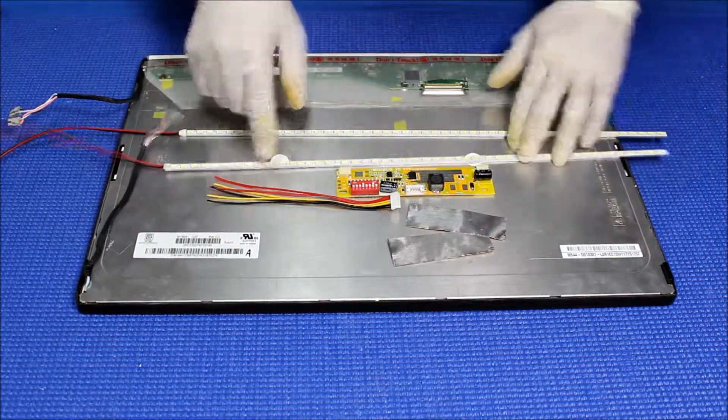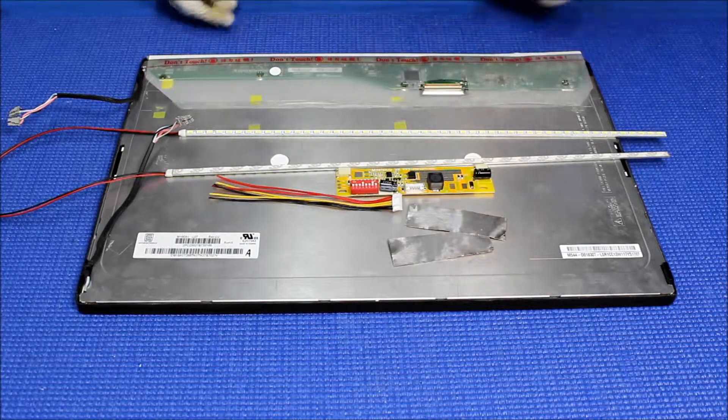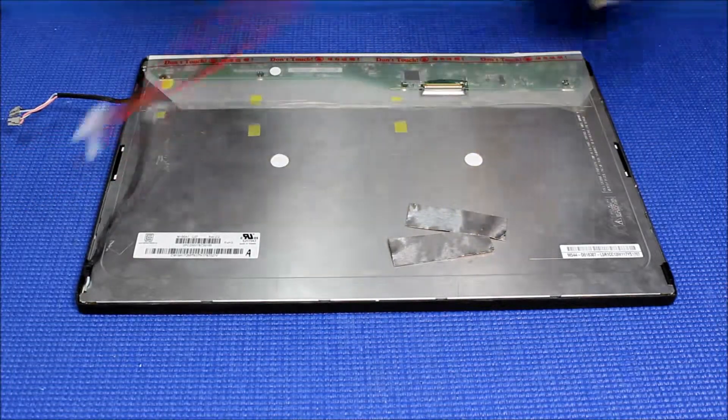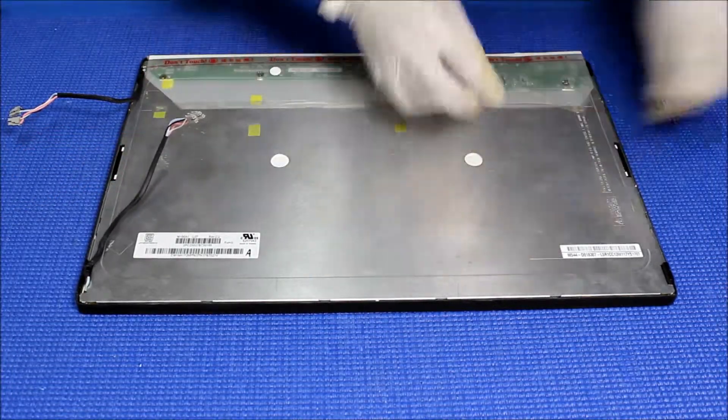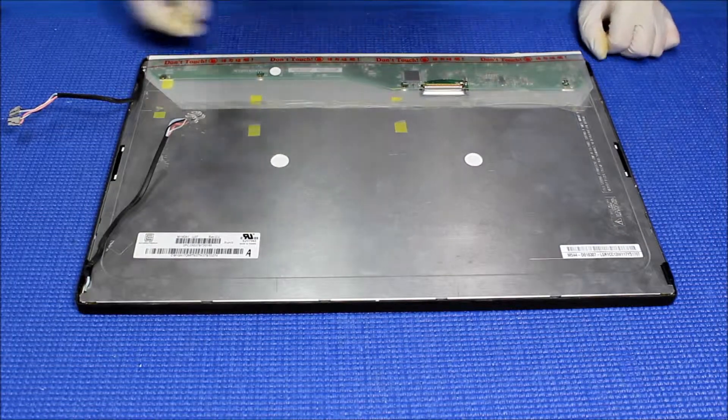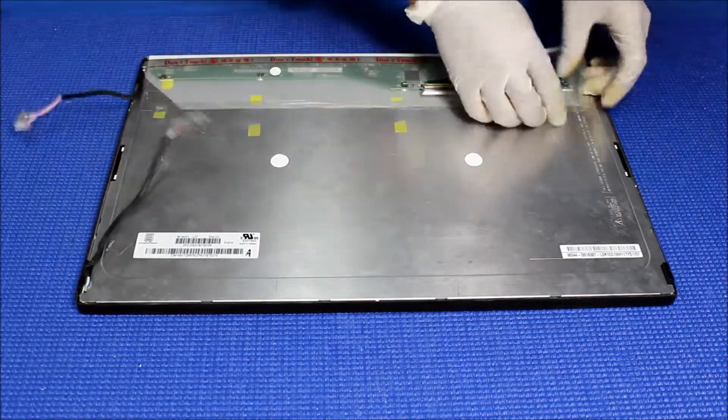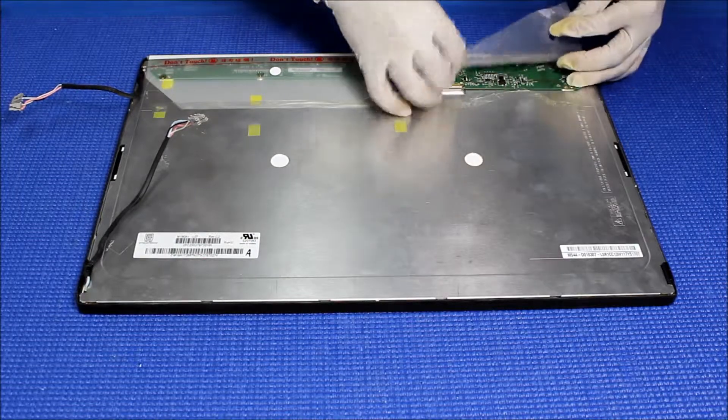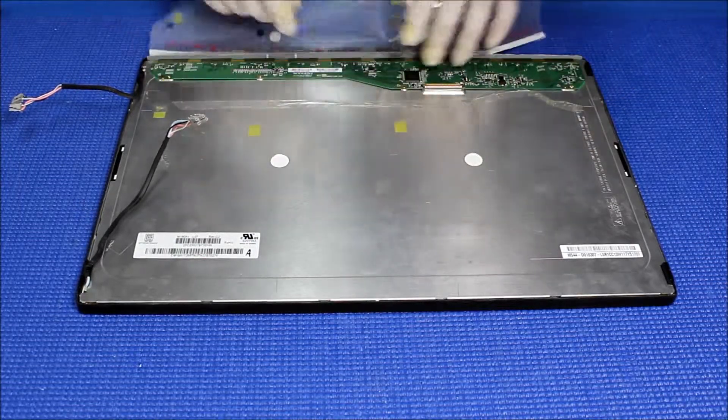The kit comes with two LED strips, one driver, wire harness, and a couple of aluminum foils. Let's set aside the kit for a while and take a look at this screen. This screen has pretty much no screws holding it, so the only thing we need to do is remove this cover first.